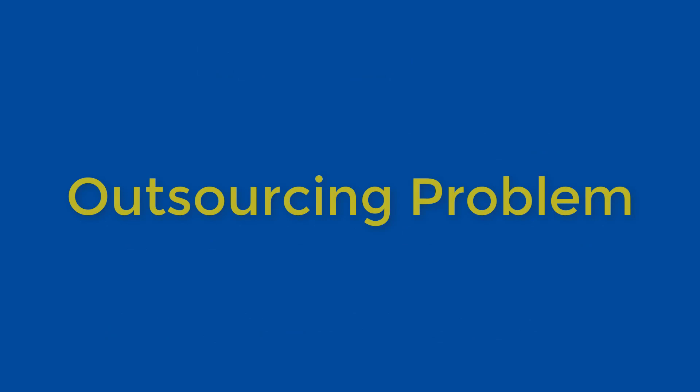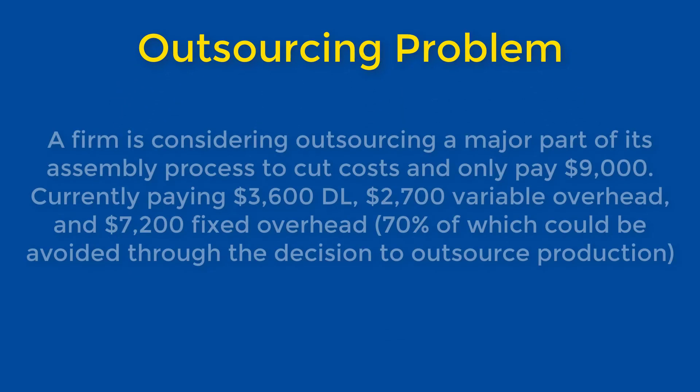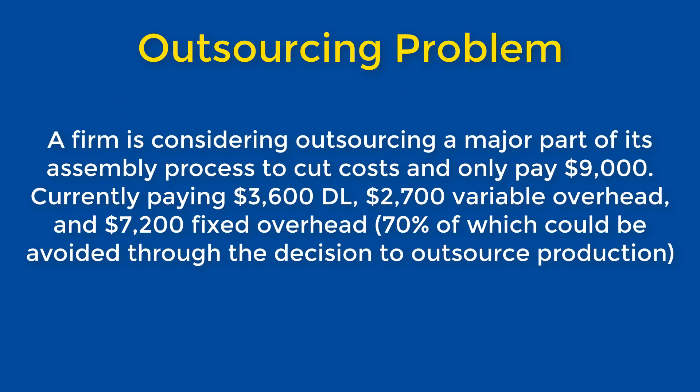Let's begin by looking at an example of an outsourcing problem where a firm is considering outsourcing a major part of its assembly process to cut costs and only pay $9,000. The firm is currently paying $3,600 for direct labor expenses, $2,700 for variable overhead, and $7,200 for fixed overhead, 70% of which could be avoided.